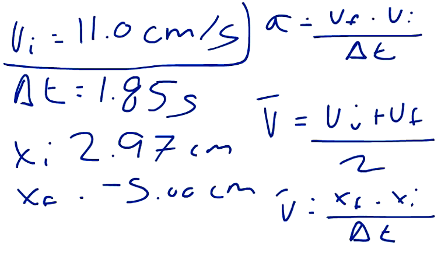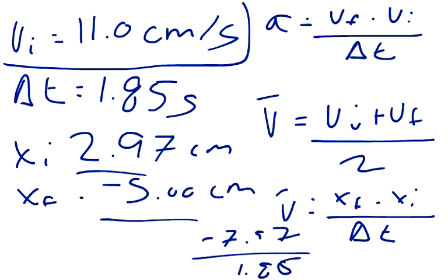So the final location was negative 5, the initial location was 2.97. So we have negative 7.97 divided by the change in time, which is 1.85 seconds. 7.97 over 1.85. So our average velocity is approximately negative 4.3 cm per second.